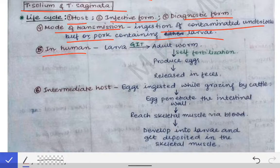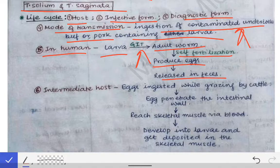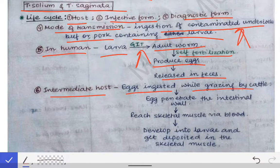In humans, when a person eats this contaminated undercooked beef or pork, the larva in the gut gets converted into an adult worm. Since it is monoecious, it self-fertilizes, produces eggs, and those eggs are released into the feces. That egg will then be present in grasses where fecal matter has been deposited, and those eggs while grazing will be eaten by cattle or pigs.